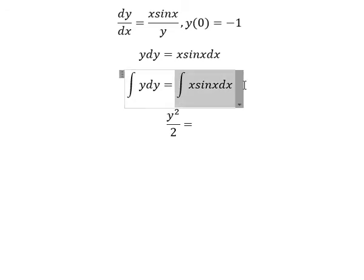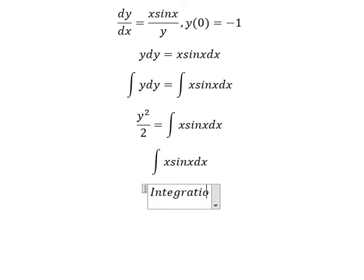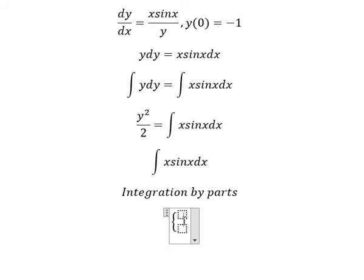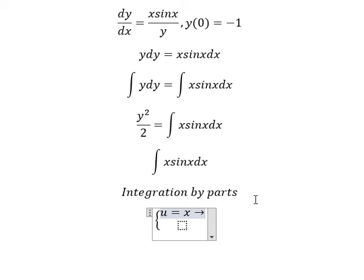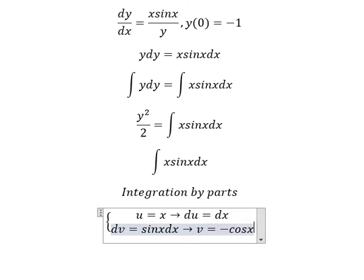Now I will show you the technique of how to find this integration. We need to use integration by parts. We have u equals x, so we do the first derivative for both sides — we have du equals dx. And dv equals sin(s) ds, so the integration of this gives v equals negative cosine s.